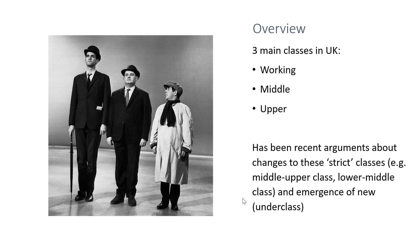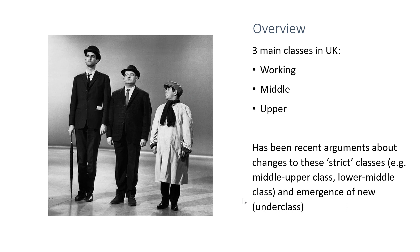For a 20 or 10 marker, the main classes within the United Kingdom traditionally would be working, middle, and upper class. These are generally based on your employment, wealth, and standing in society. Recently there have been arguments that these are a little too strict, so there's been movement between classes and the emergence of new classes such as the underclass, which we'll explore today.